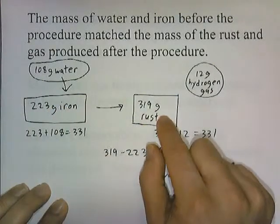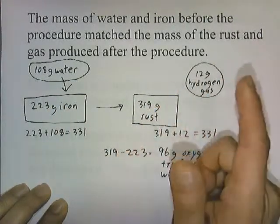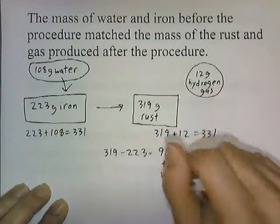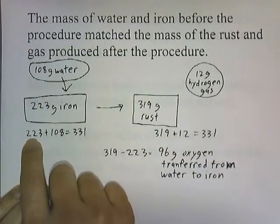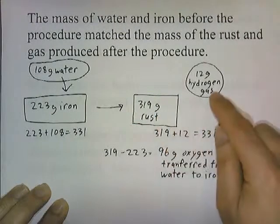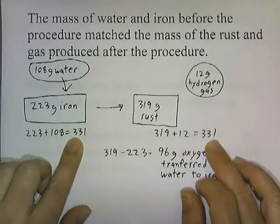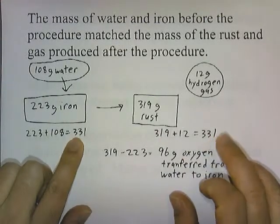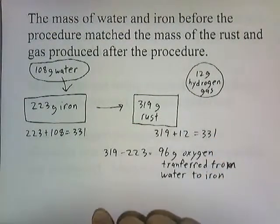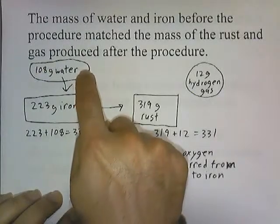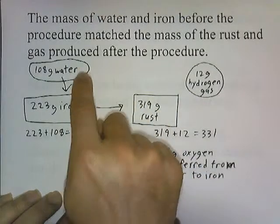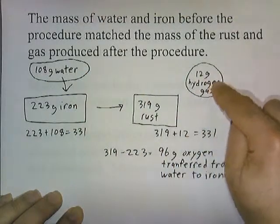After the procedure, he ended up with 319 grams of rust, and also some gas was produced in the reaction. He was able to capture the gas and weigh it. The total mass of what he started with — 223 grams of iron and 108 grams of water — matched what he ended with: 319 grams of rust and 12 grams of hydrogen gas. They all add up to 331. He started with 331 grams and ended with 331 grams. Lavoisier demonstrated that the oxygen in the water combined with the iron to give something heavier, and the hydrogen part of the water came off as hydrogen gas.